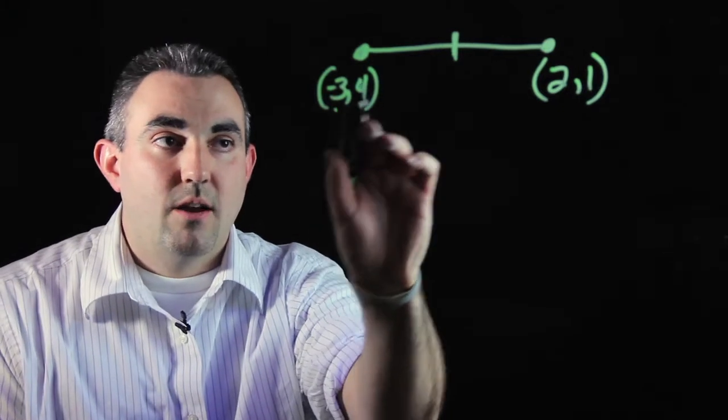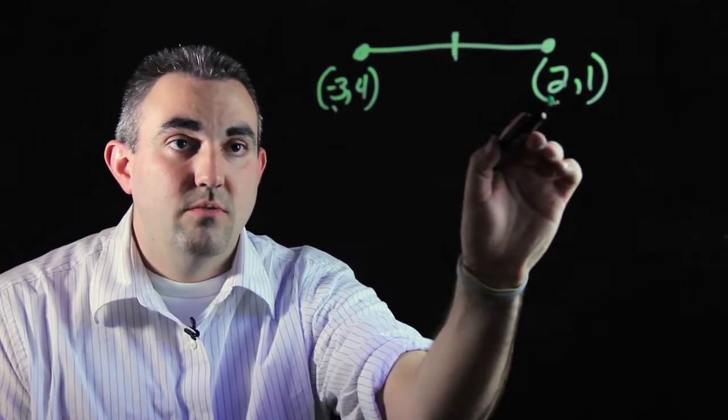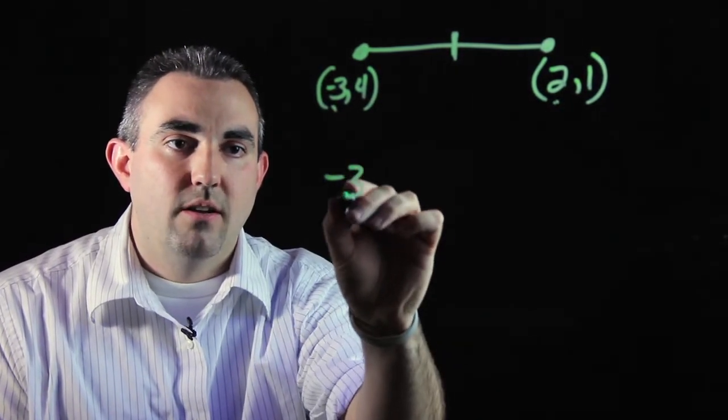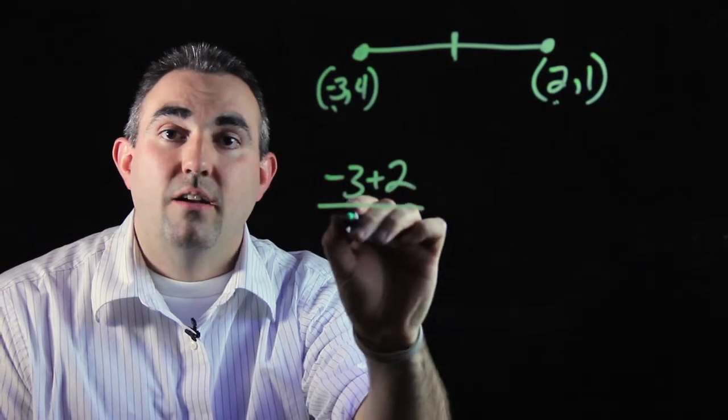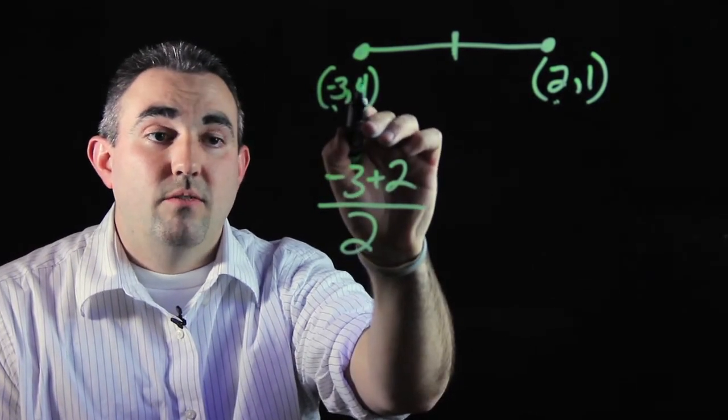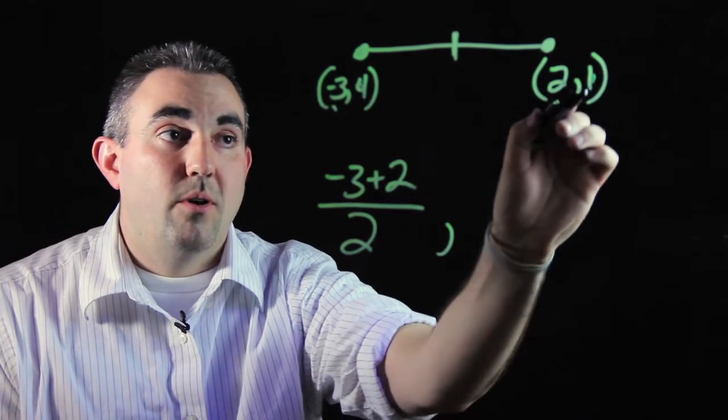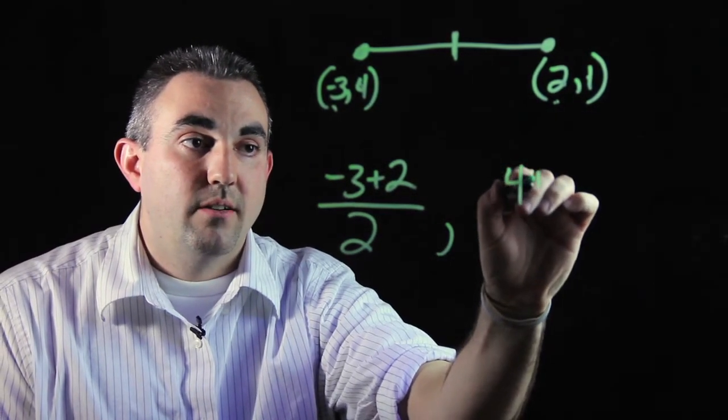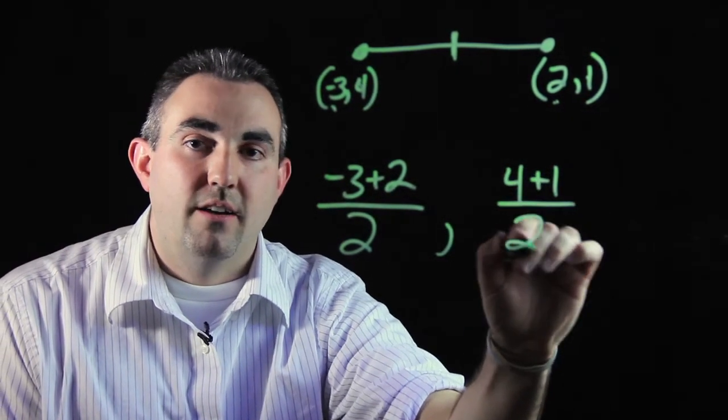is to take your x numbers, which are negative 3 and 2, add them together, and cut it in half. Also, for the second point, 4 plus 1, add your y numbers together, and cut it in half.